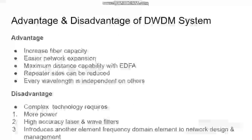Advantages and disadvantages of DWDM systems. Advantages: it increases fiber capacity, easier network expansion is possible as we add OADM and EDFA amplifiers, maximum distance transmission is possible, usage of repeaters decreases, and every wavelength is independent of others. Disadvantages: complex technology requires more power, high accuracy lasers are required, and it introduces a frequency domain element to network design and management.